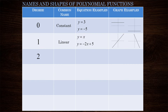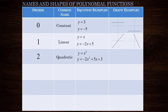What about degree two polynomial functions? Well, these are what we call quadratic functions. On a graph they are parabolas. y equals x squared is the most basic example, but we can also have quadratic functions that include an x squared term as well as an x term and a constant term. When we see these functions on a graph they are parabolas.